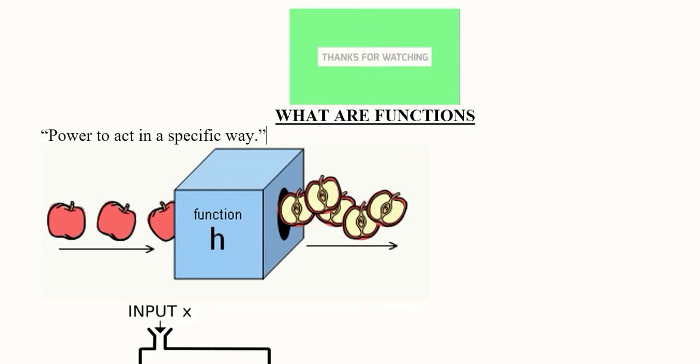This is what a function means - a function has a certain way of doing things due to which it performs a certain function. For example, if we consider this machine, if we introduce apples into it, it slices them. These are the inputs and these are the outputs.